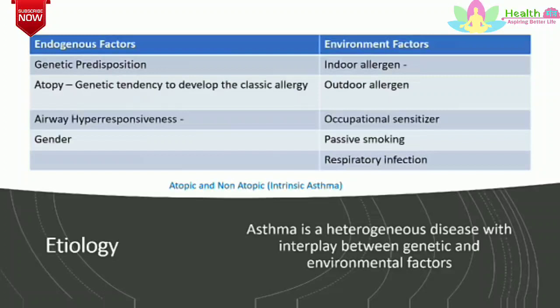The allergens that lead to sensitization are usually proteins that have protease activity. The common allergens are house dust mites, cat and dog fur, cockroaches, grass, and tree pollens. Intrinsic asthma, that is non-atopic asthma, shows a negative skin test and normal serum IgE level. It is adult in onset and patients commonly have nasal polyps and may have aspirin sensitivity. They usually have more severe and persistent asthma.